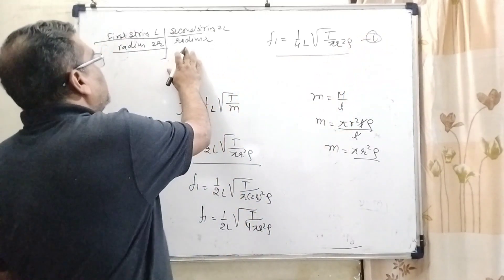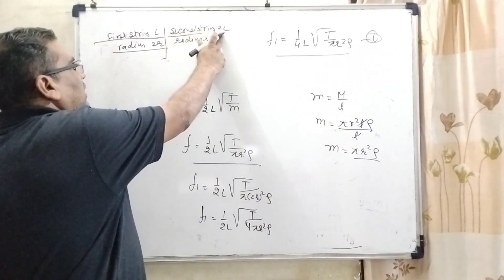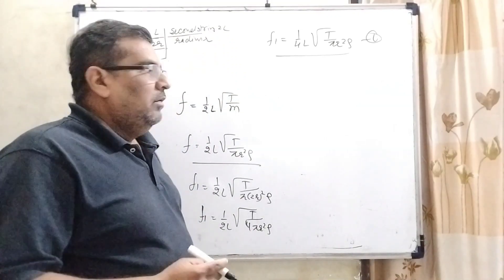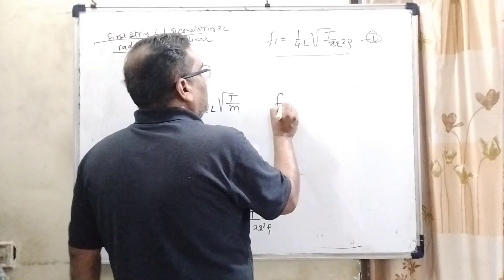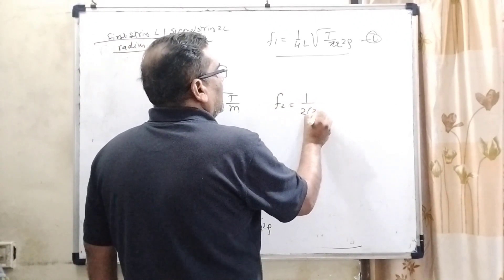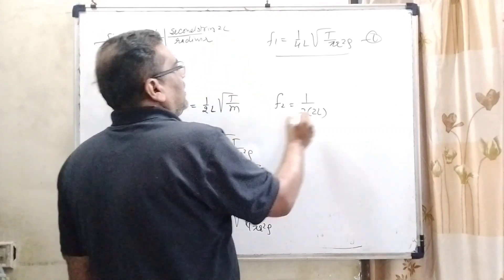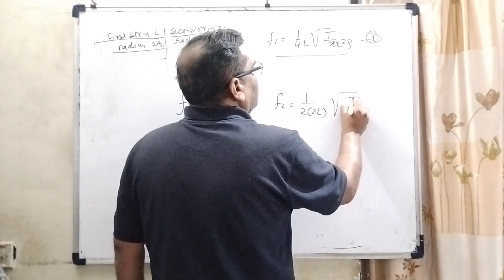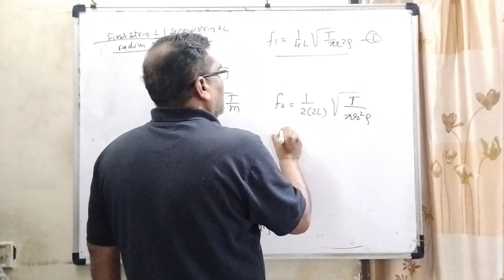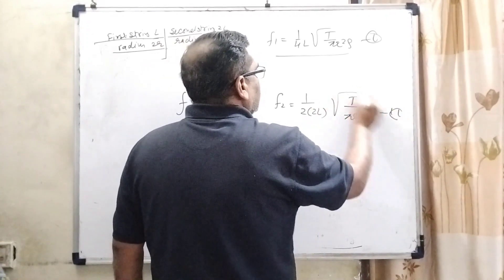For second condition we have given second string length is 2L but radius is R. So f2 equal to 1 upon 2, length is given that is 2L and T tension force and mass per unit length that is pi R square rho. So it is the second condition.